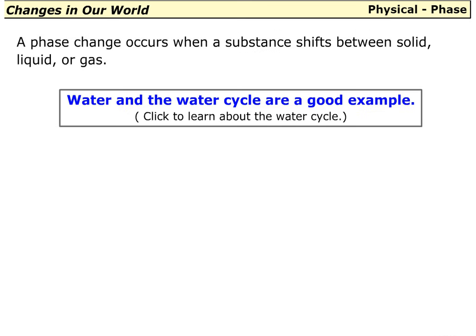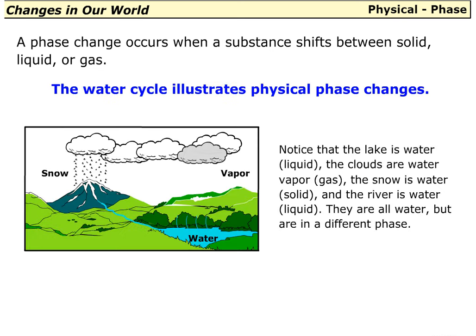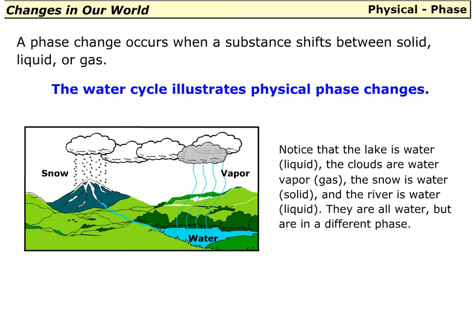A phase change occurs when a substance shifts between solid, liquid, or gas. Water and the water cycle are a good example. The water cycle illustrates physical phase changes — notice that the lake is water, the clouds are water vapor, and the snow is water.